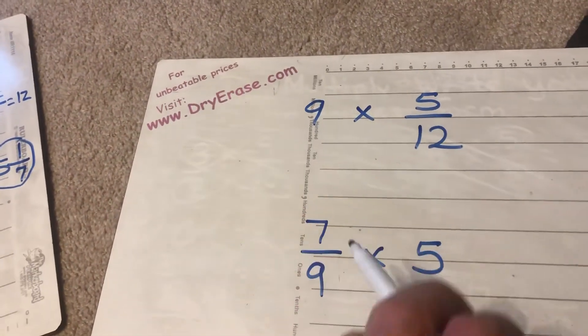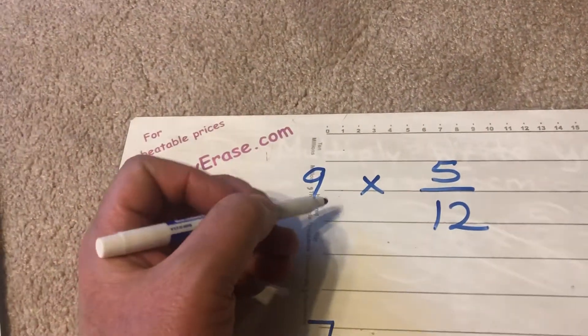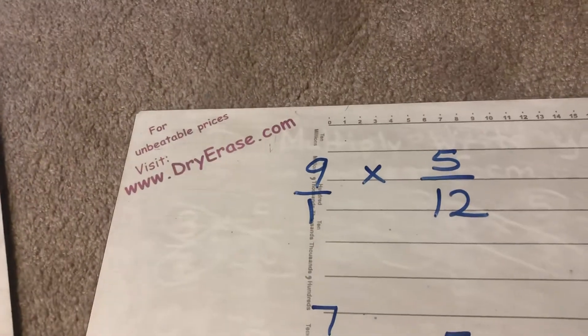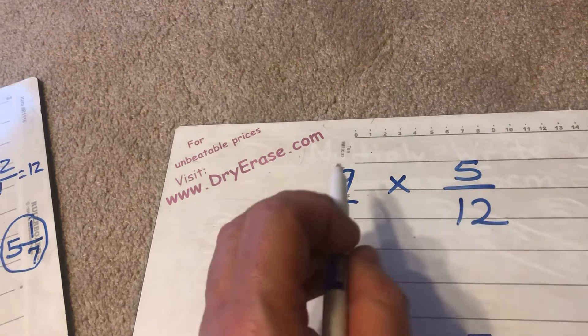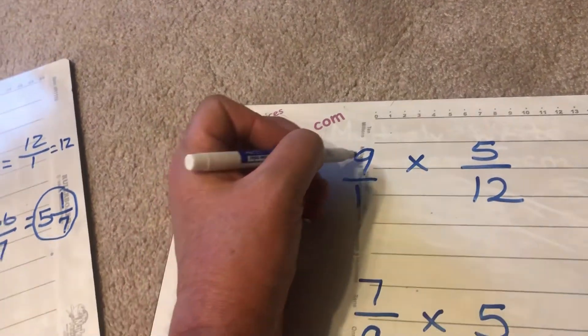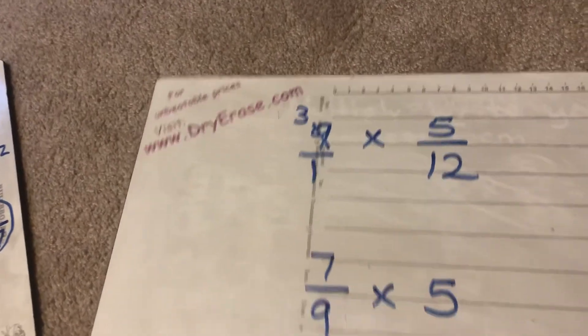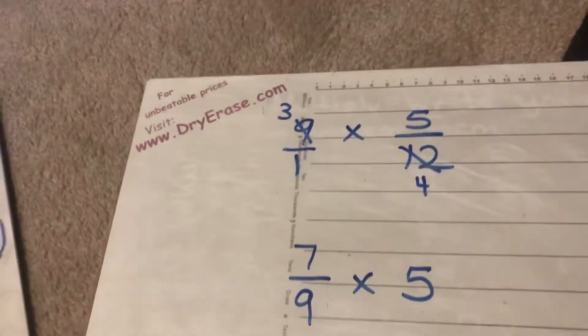Sometimes the whole number comes first. Sometimes the whole number comes second. So when I look at 9 times 5 over 12, once again the whole number has to become a fraction, it becomes 9 over 1. 9 and 12, well they are both divisible by 3. 9 divided by 3 is 3. 12 divided by 3 is 4.